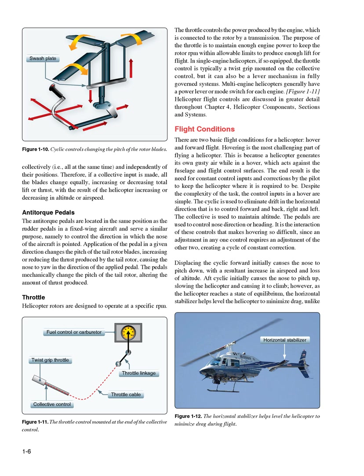Flight Conditions. There are two basic flight conditions for a helicopter: hover and forward flight. Hovering is the most challenging part of flying a helicopter, because a helicopter generates its own gusty air while in a hover, which acts against the fuselage and flight control surfaces. The end result is the need for constant control inputs and corrections by the pilot. Despite the complexity of the task, the control inputs in a hover are simple: the cyclic is used to eliminate drift in the horizontal direction — forward and back, right and left; the collective is used to maintain altitude; and the pedals are used to control nose direction or heading. It is the interaction of these controls that makes hovering so difficult, since an adjustment in any one control requires an adjustment of the other two, creating a cycle of constant correction.